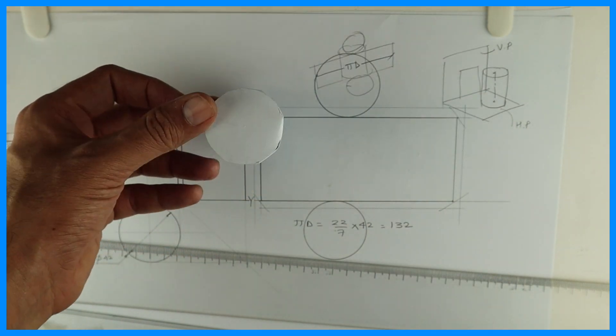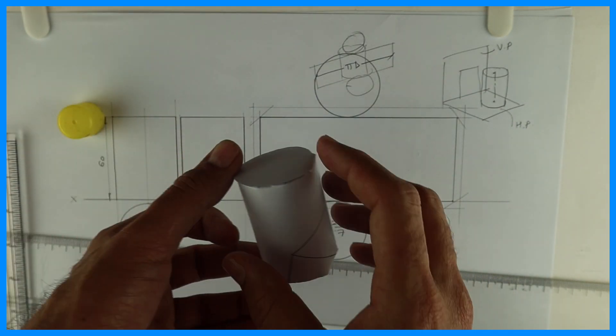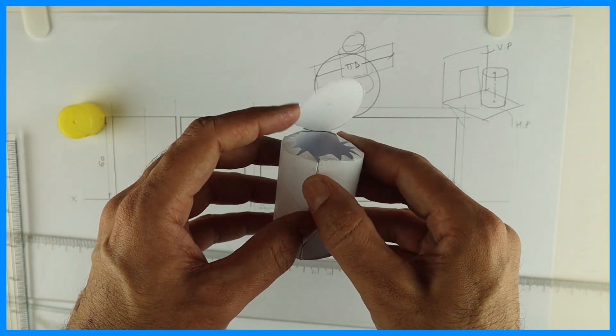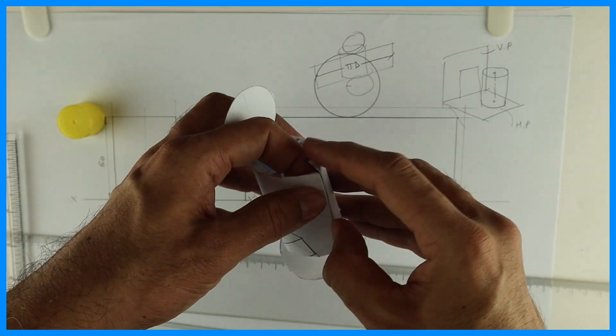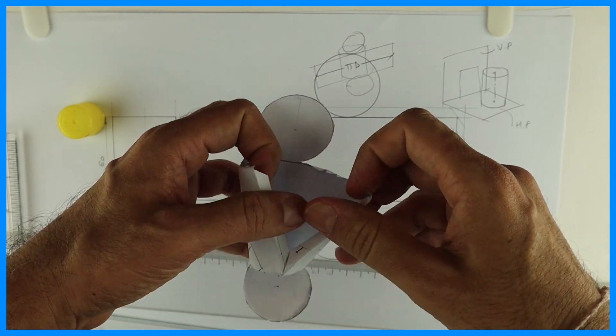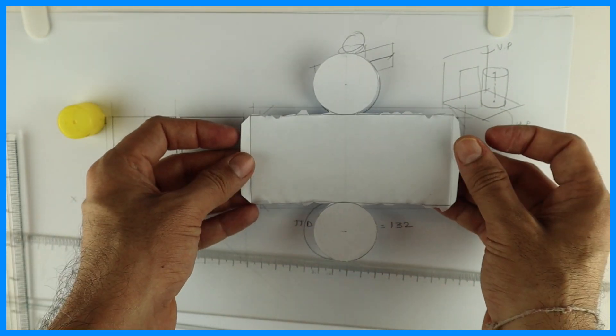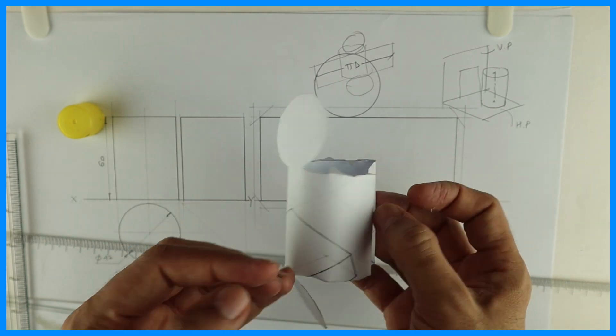Like this. This is how it looks in top view, front view, side view and for development - when you open it, this is how it looks. So I hope you people have understood what do you mean by development. Thank you.